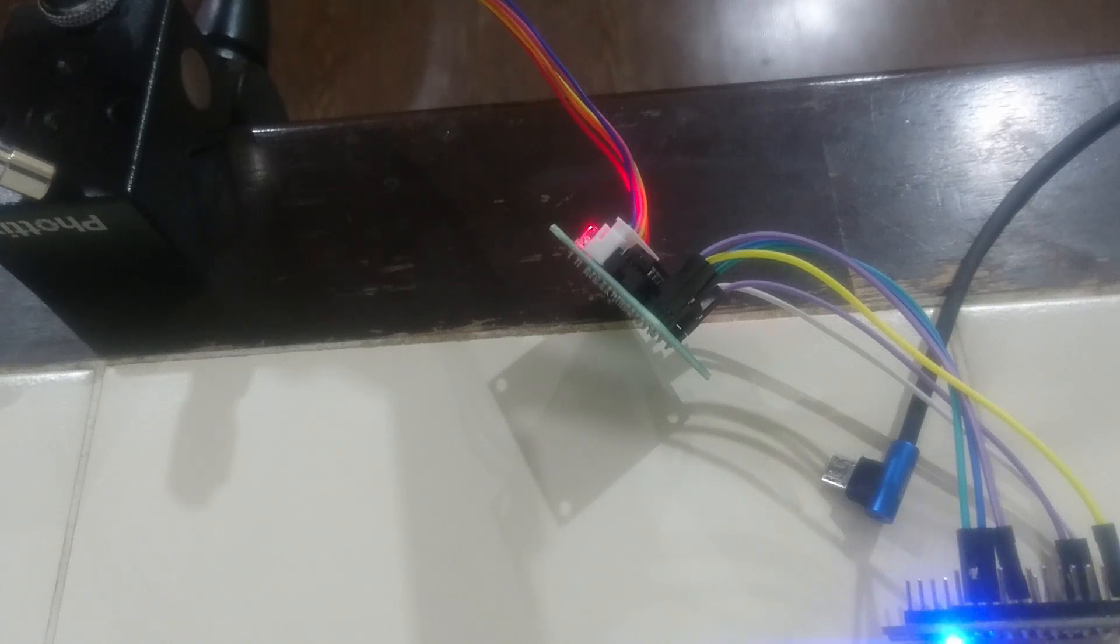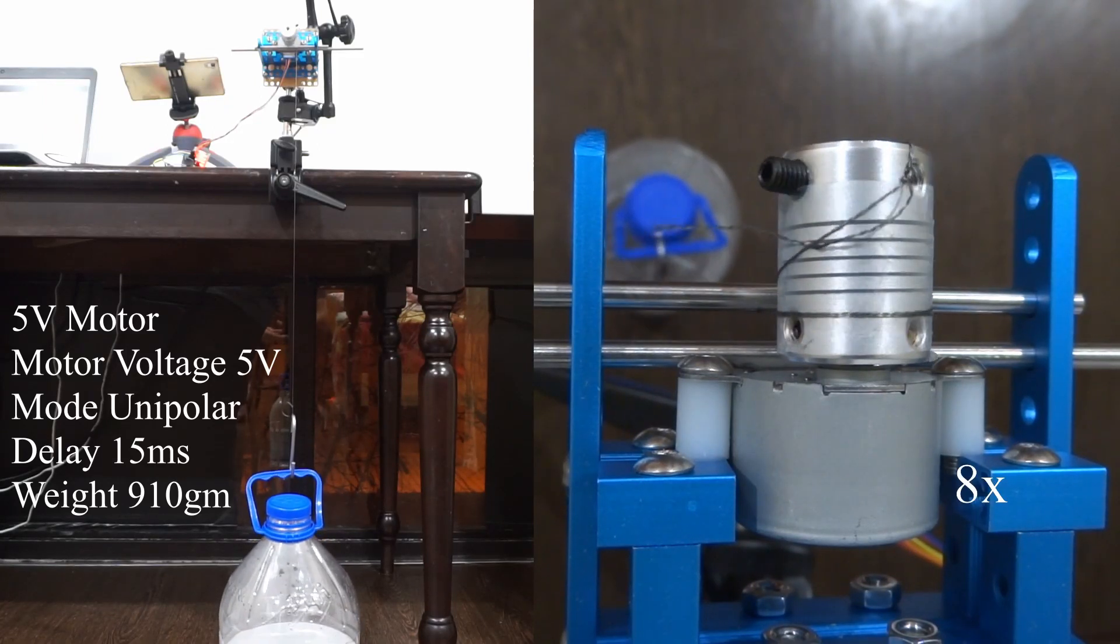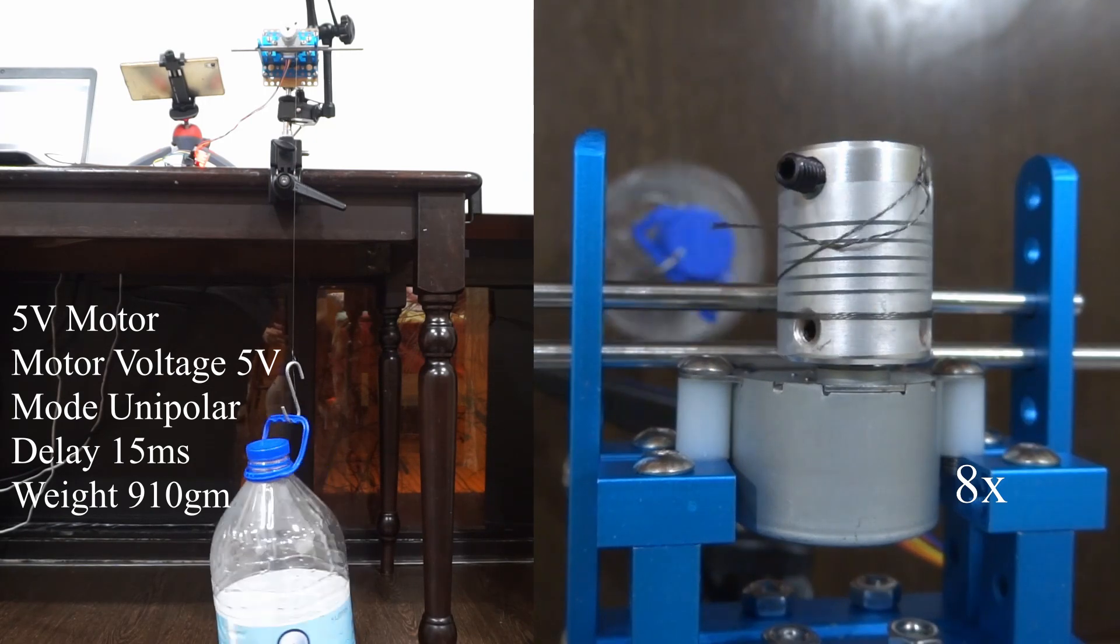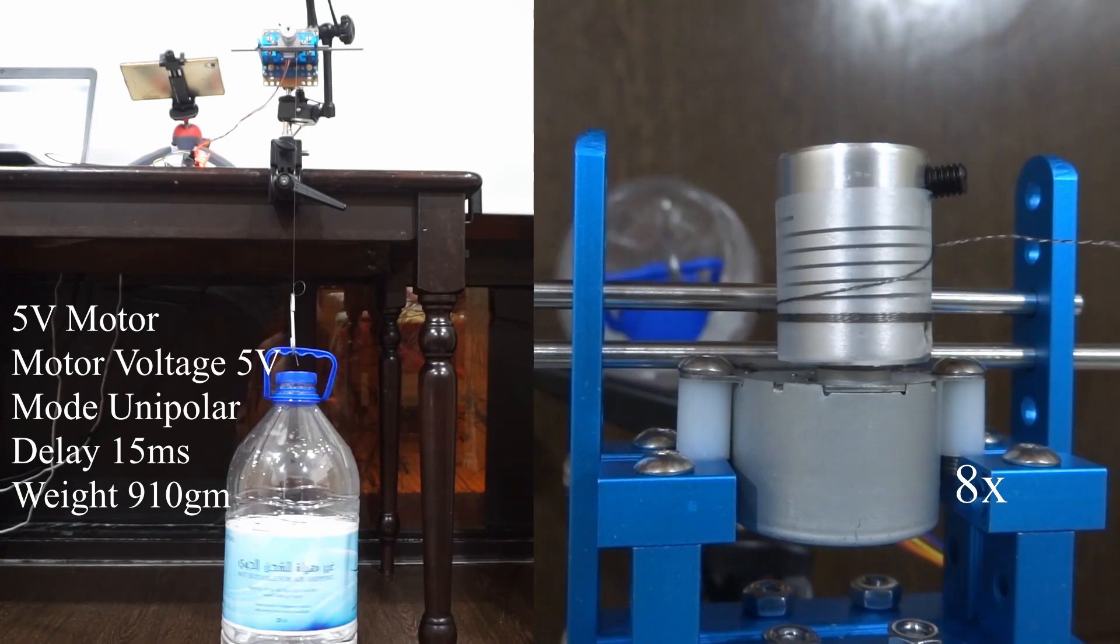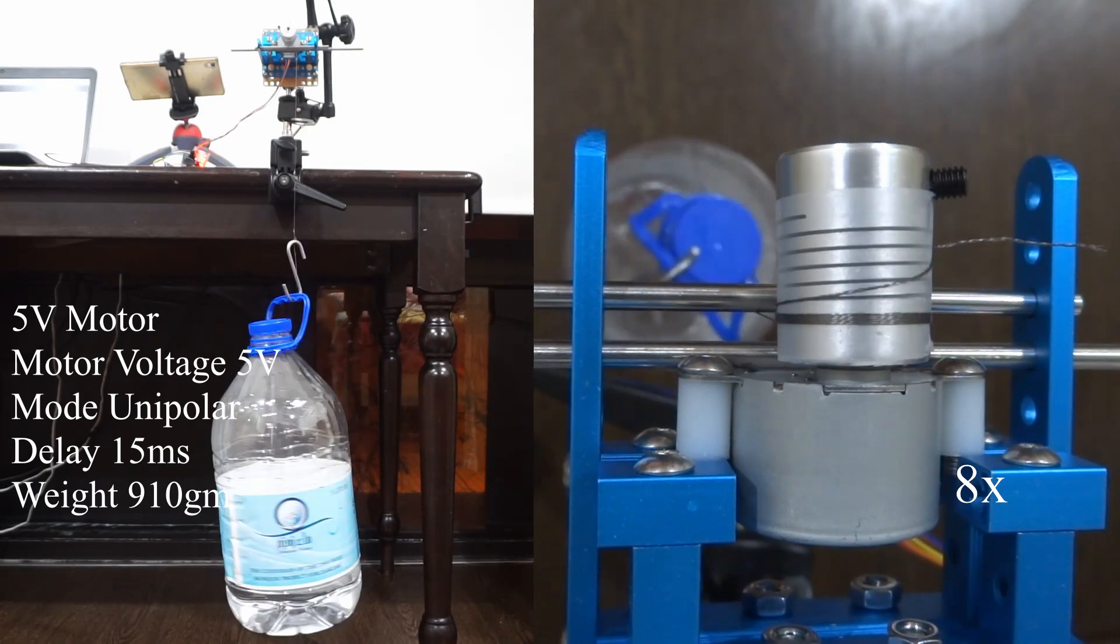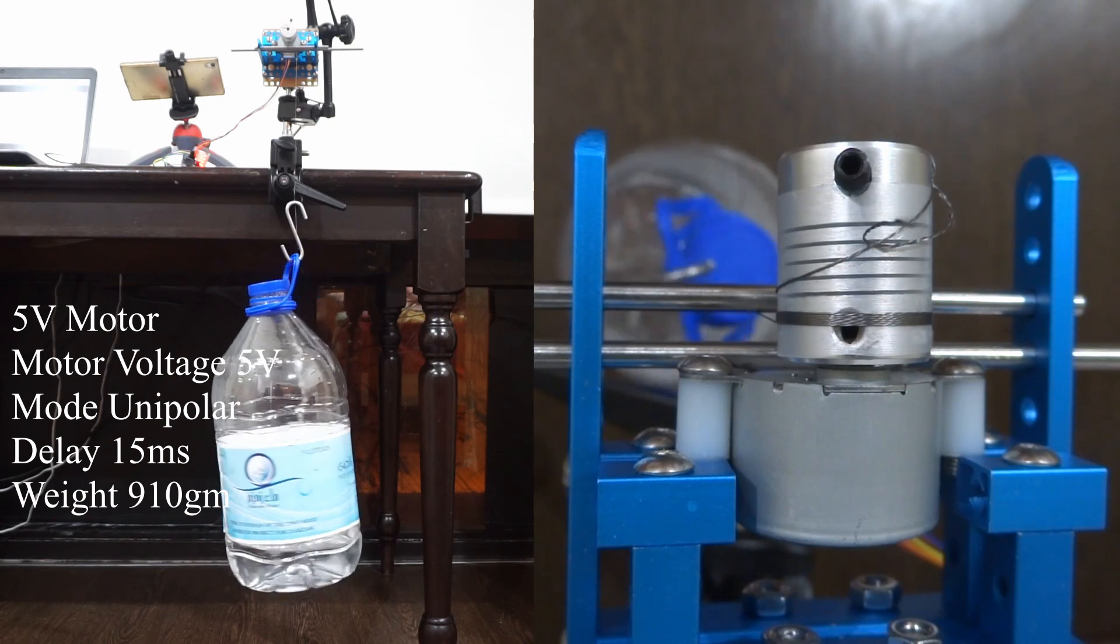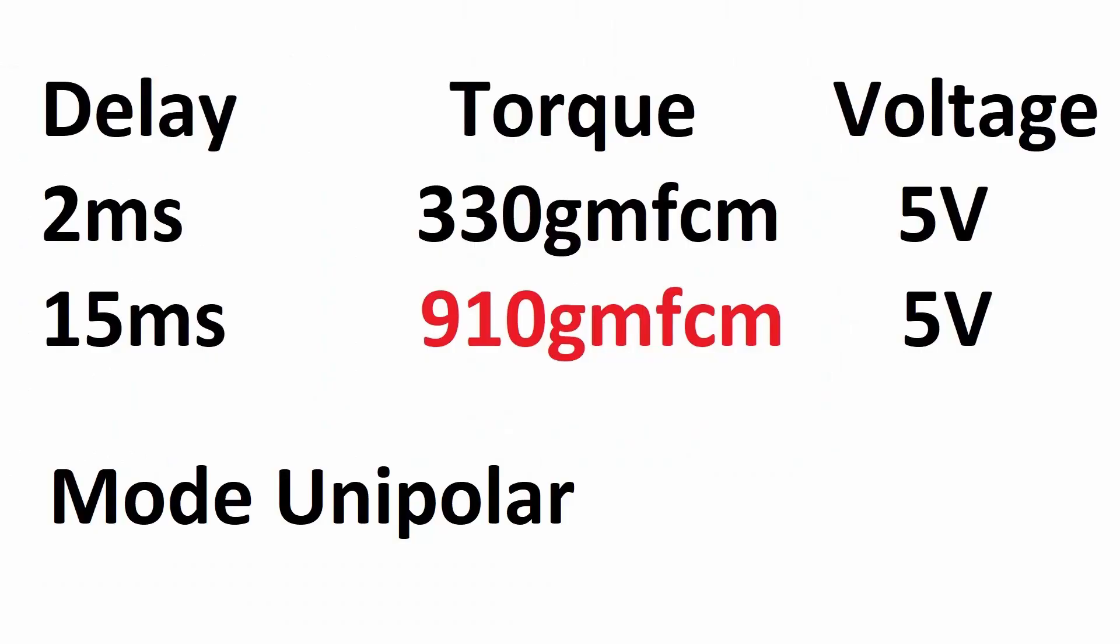The setup is still using a unipolar driver with a 5V motor. The weight of the bottle is 910 grams. So now the maximum torque for the 5V motor in unipolar mode is 910 grams force centimeter but at a lower speed.